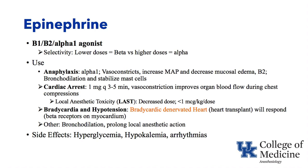During local anesthetic systemic toxicity — LAST — it is recommended that the epinephrine dose be reduced to less than 1 mcg per kilogram, a much reduced dose compared to ACLS resuscitation. In a denervated heart such as a heart transplant patient that no longer has vagus nerve or T1 through T4 sympathetic innervation — if they become bradycardic, the heart still has beta receptors which often upregulate. Epinephrine and isoproterenol — drugs with beta-1 effects — can increase the heart rate in these patients.